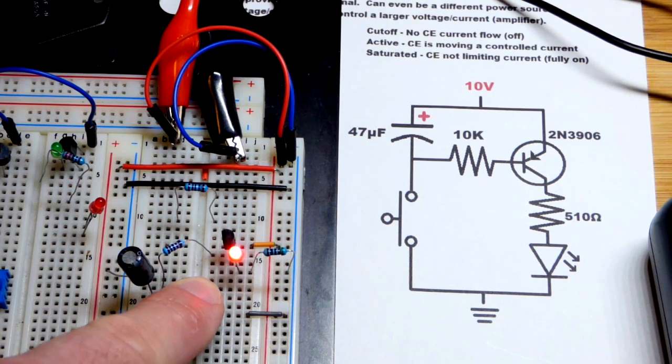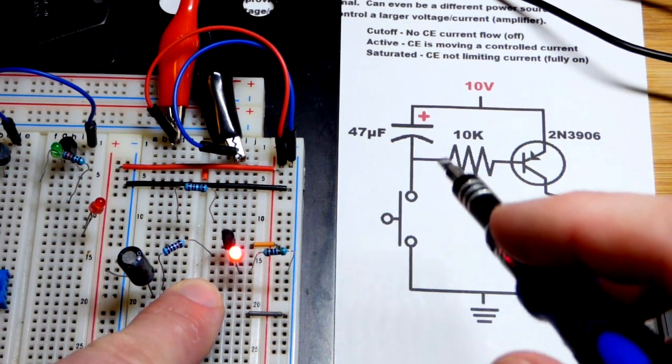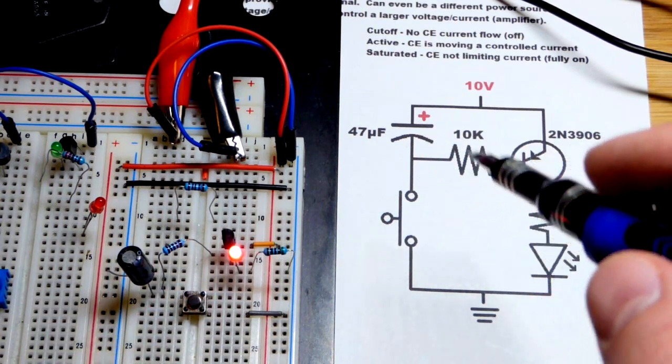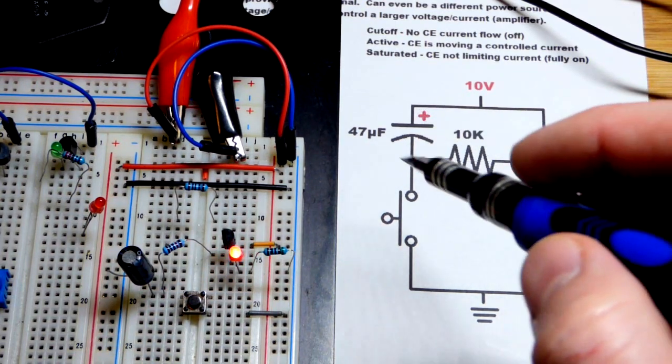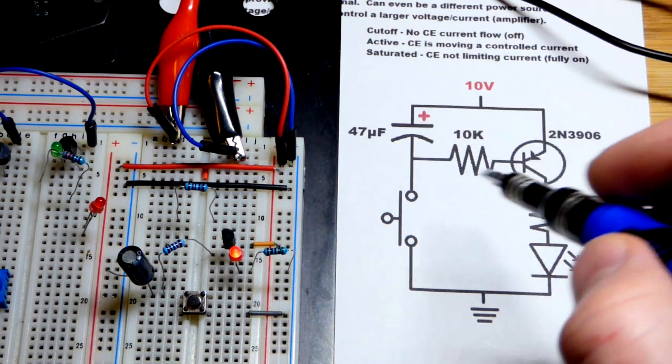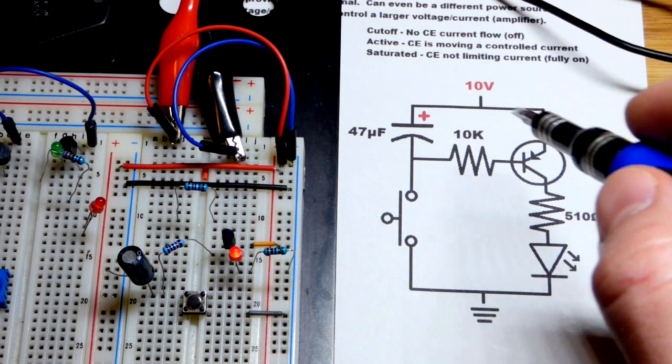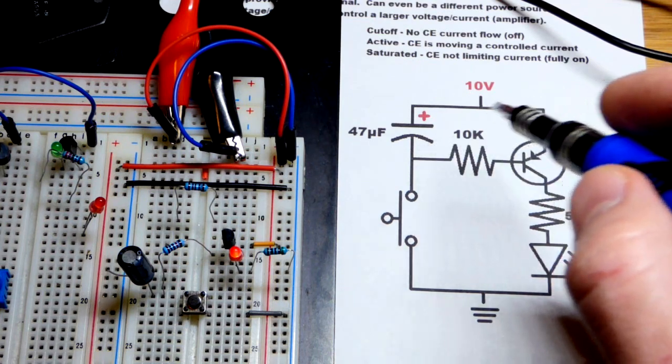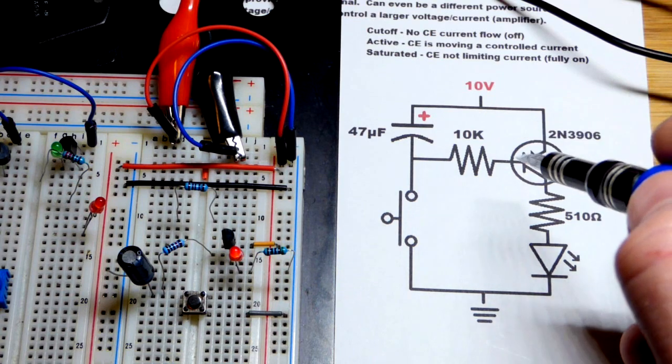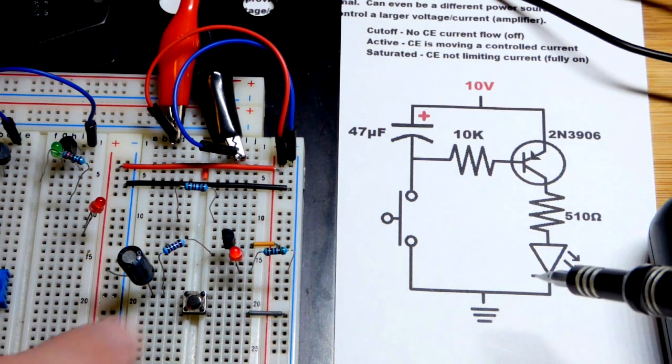We got positive there, and then negative there, it charged. Now I let go, now the capacitor is discharging. And you can see the arrow is pointing the current direction right there. It is discharging. As long as current's flowing through there, then it will allow current to flow through there. As long as it's enough current to keep it saturated, the LED will be fully on.